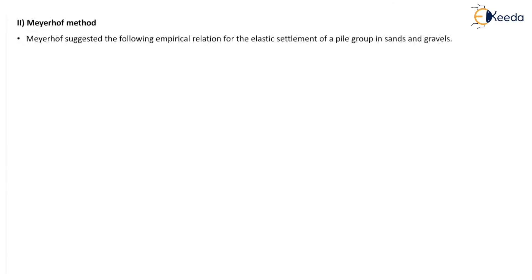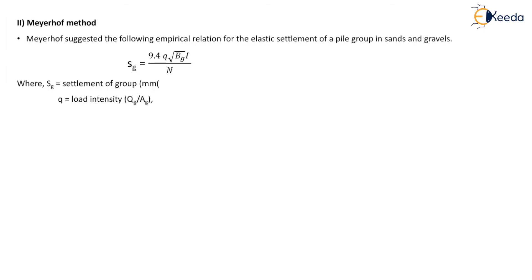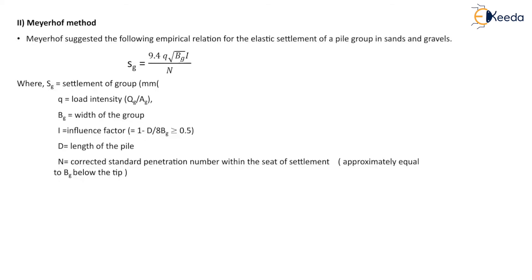The second method for the determination of the settlement characteristic of cohesionless soil is the Meyerhoff method. Meyerhoff suggested the following empirical relation for the elastic settlement of a pile group in sands and gravels: SG = 9.4 × Q × √BG × I / N, where SG is the settlement of the group in mm. Q is the load intensity given as QG divided by AG. BG is the width of the group. I is the influence factor equal to 1 minus D divided by 8BG, and it should be less than or equal to 0.5. D is the length of the pile. N is the corrected standard penetration number within the seat of settlement, approximately equal to BG below the tip.